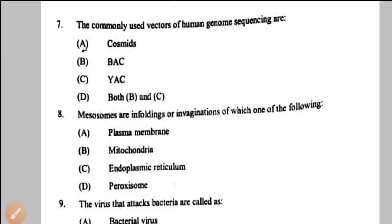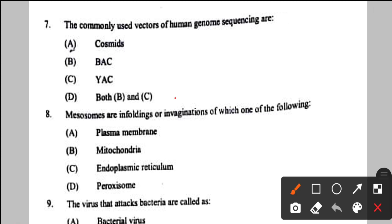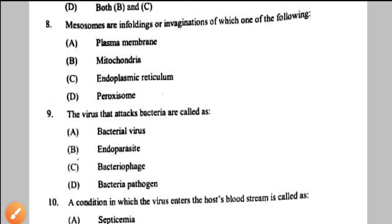Question number 7: commonly used vectors for human genome sequencing are cosmids, BAC (bacterial artificial chromosome), and YAC (yeast artificial chromosome). The answer is both B and C because they can clone DNA fragments of more than one million base pairs in size. So option D is the correct answer.